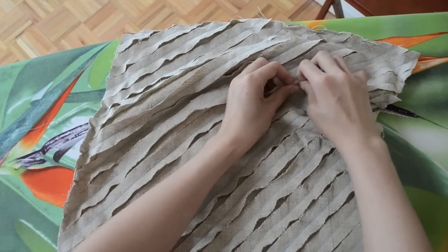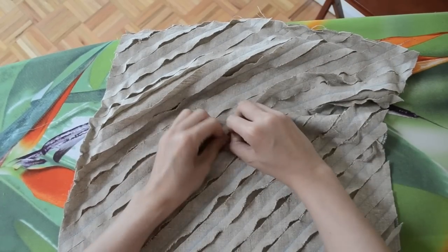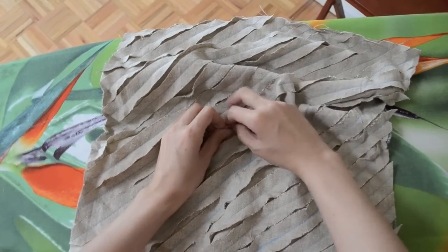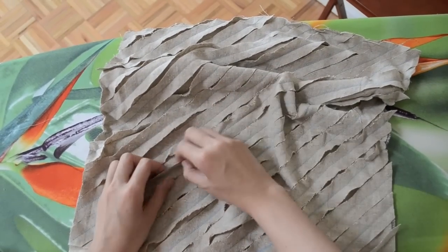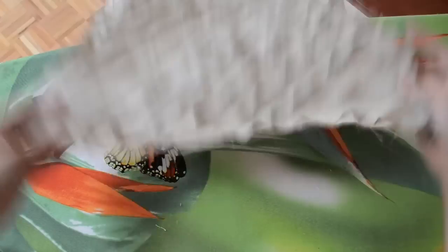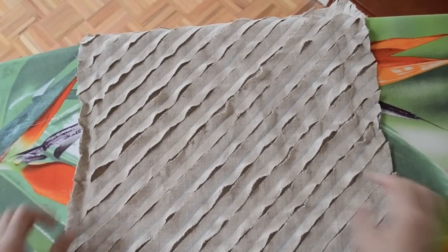And I should point out that because these lines are diagonal, not really on the line of the fibers of the fabric, they won't fray to the point where you will completely lose the fabric. So I'm just pulling to create some wavy texture.